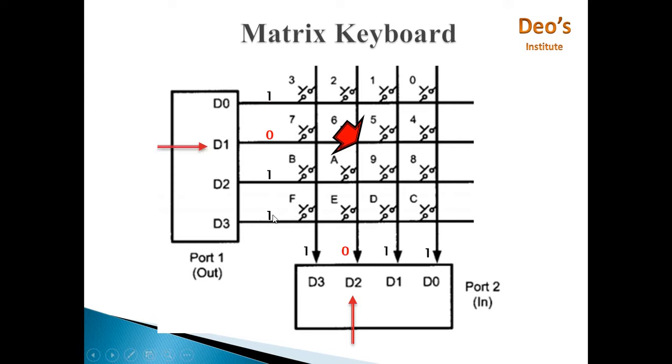Next, we'll make this line 0 and rest all 3 lines 1. So when we make this line 0, then immediately D2 becomes 0.